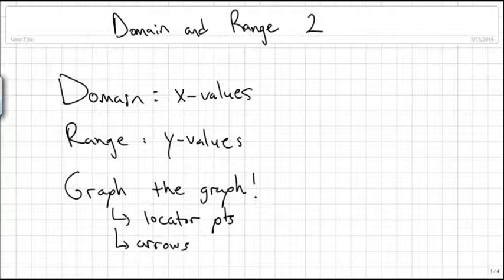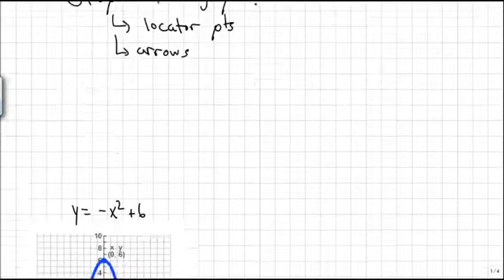A good rule of thumb to follow is that if the graph has arrows on both sides then the domain is probably going to be all real numbers. We're going to see that in this next example.